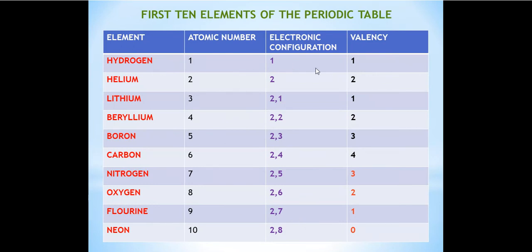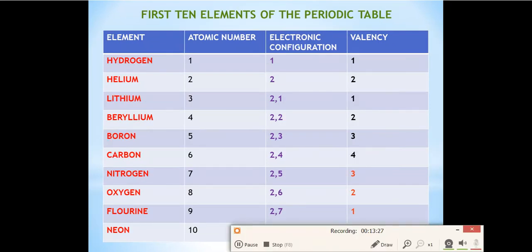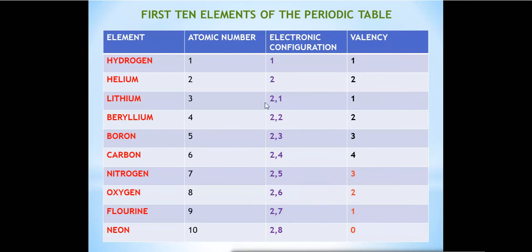Valency equals the number of electrons in the outermost shell. For hydrogen: one electron in the outermost shell, valency is 1. For helium: two electrons, valency is 2. For lithium: one electron in the outermost L shell, valency is 1. For beryllium: two electrons in the outermost shell, valency is 2. For boron: three electrons in the outermost shell, valency is 3. For carbon: four electrons in the outermost shell, valency is 4.